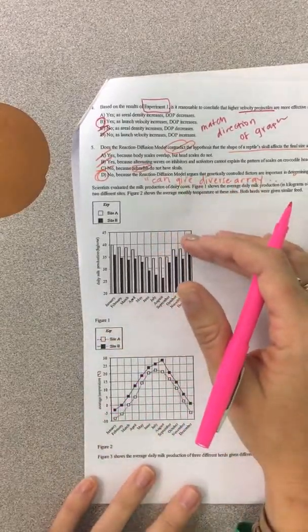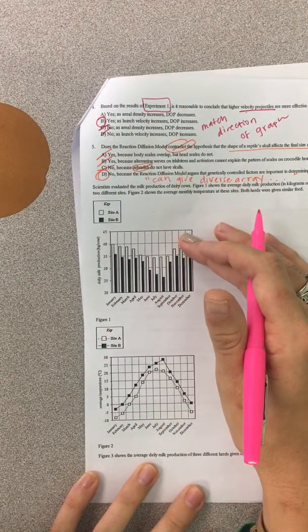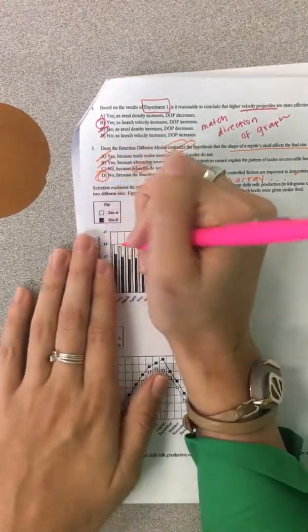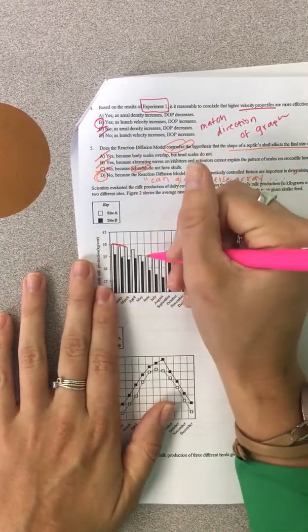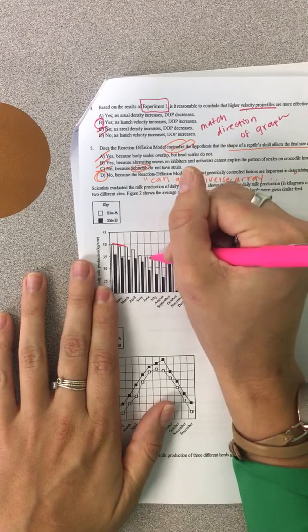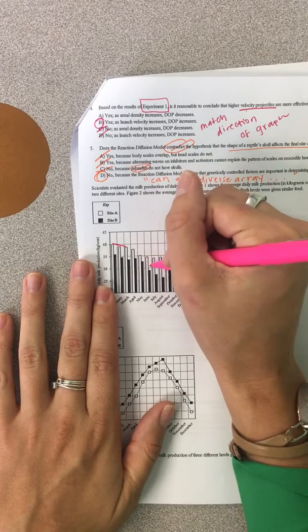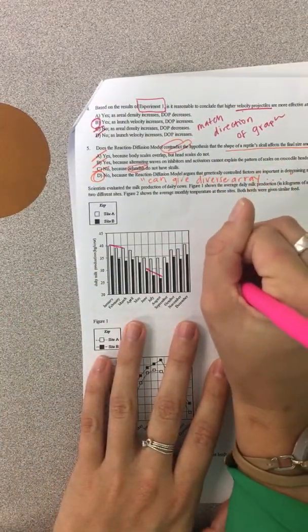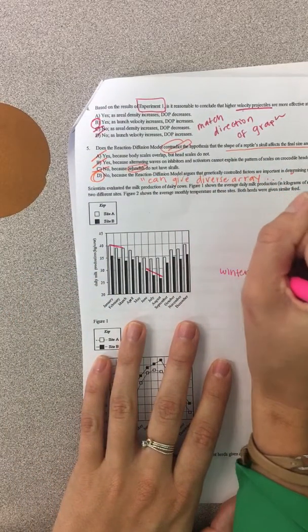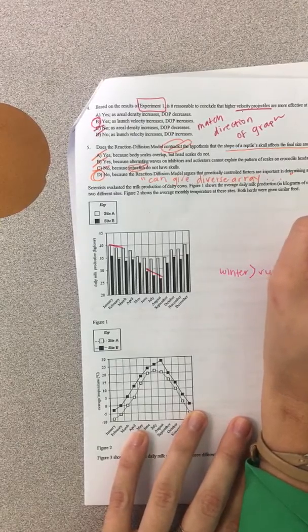So figure 1 and 2. And then the daily milk production. So this is the winter right here. And then this is the summer right here. And we're looking at site B. June, July, August. So winter has more milk than summer.